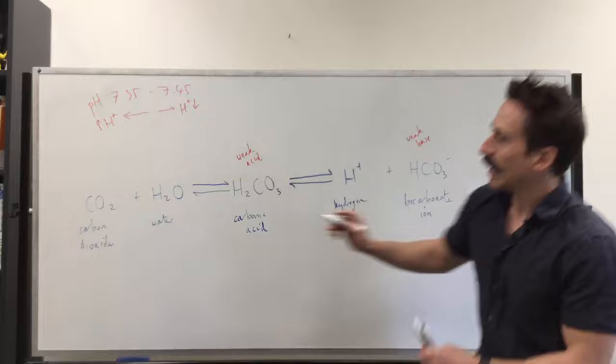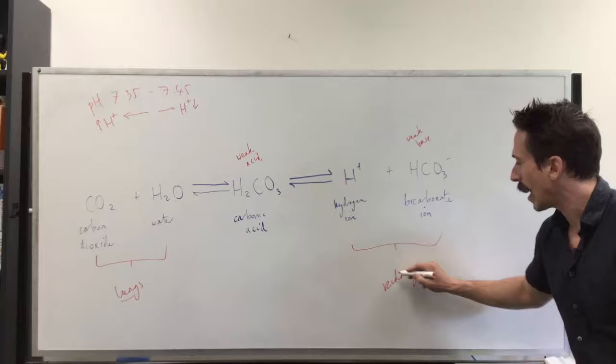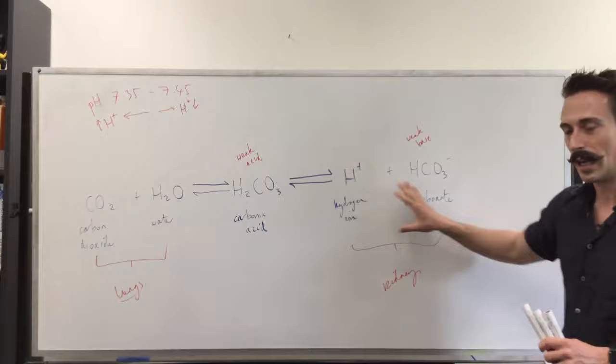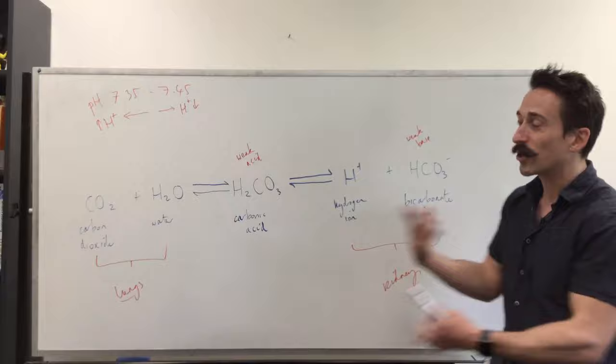Now let me talk about it in regards to how it actually works. This end of the equation deals with the lungs. This end of the equation deals with predominantly the kidneys. This is important because when we look at imbalances in regards to pH, we can say if something's wrong here, it could be metabolic or kidney caused. If something's wrong here, then it could be respiratory caused. And this is going to be the basis of respiratory versus metabolic acidosis or alkalosis.